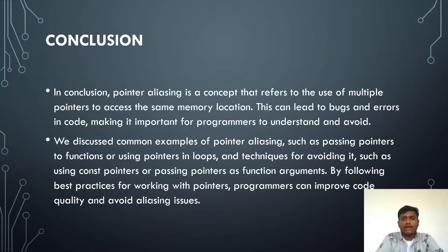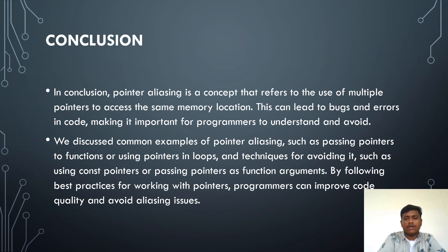Till now we have seen pointer aliasing and embedded system explanations. Coming to the conclusion — pointer aliasing is a concept that refers to the use of multiple pointers to access the same memory location. This can lead to bugs and errors in the code, making it important for programmers to understand and avoid.